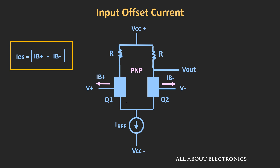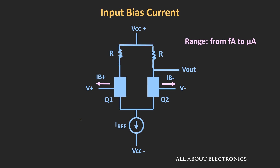This input offset current can be either positive or negative, but in data sheets it is defined by an absolute value. For general purpose op-amps, the value of the input bias current is typically in the range of nano amperes. But it can be as high as micro amperes for very high speed op-amps, or it can be as low as femto amperes for very precise amplifiers. For example, for the LT6273, which is a very high speed op-amp, the input bias current is in the range of micro amperes.